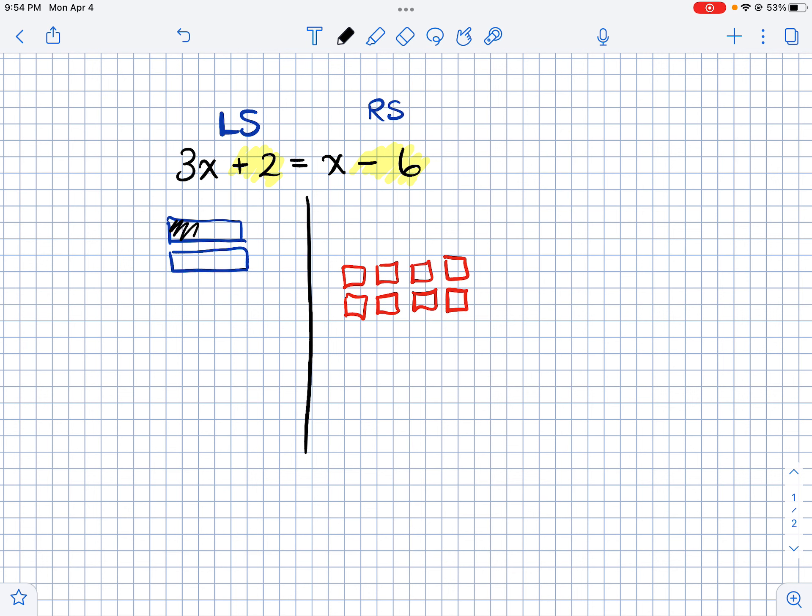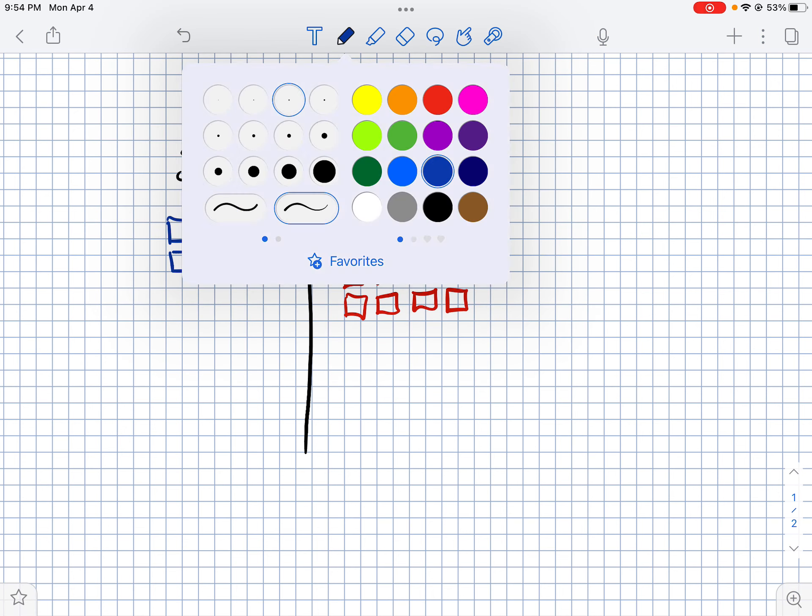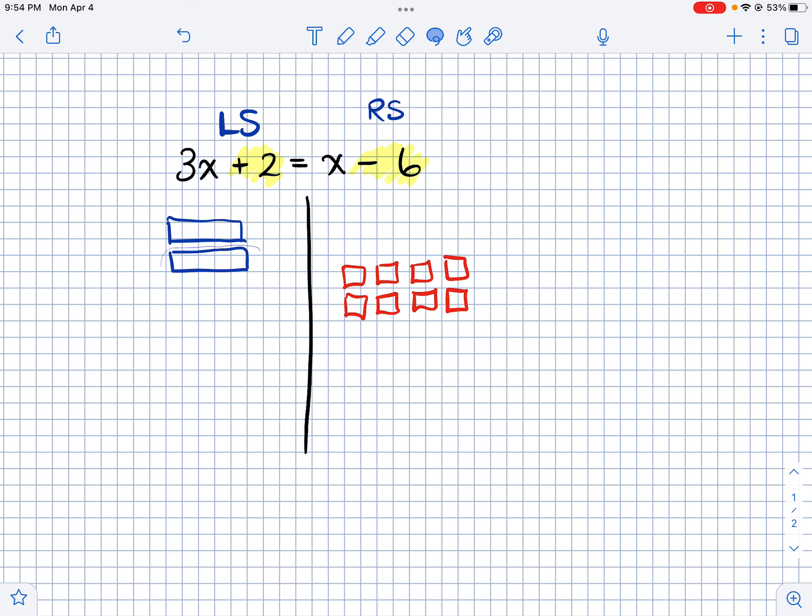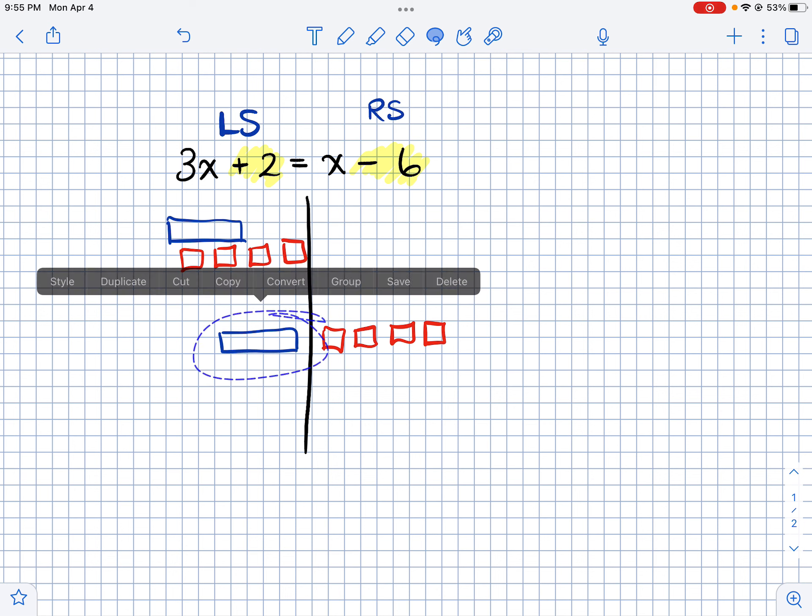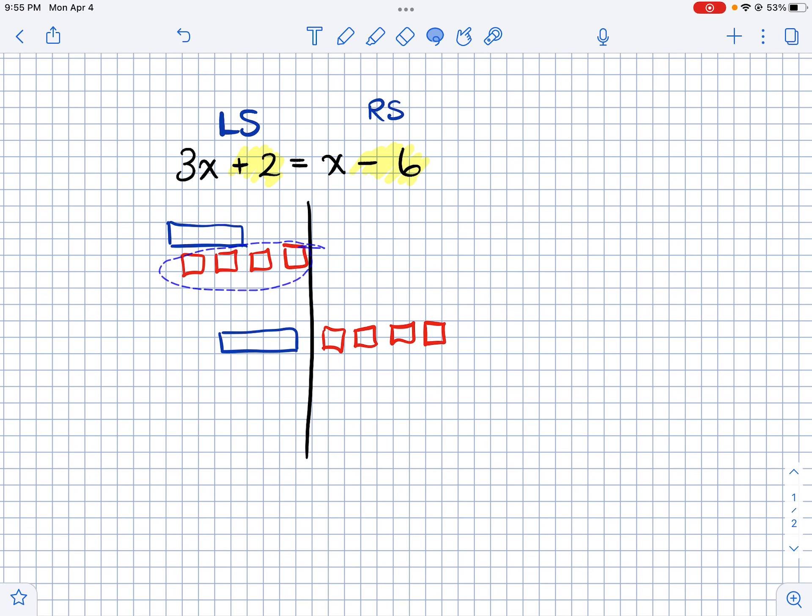So now my goal is to figure out what is one x tile worth. So now I kind of want to split these single tiles evenly amongst the x's. So I'll take this guy down here. And then I can see pretty easily that if I pair these four with this guy, then those four can fit with that x. So now I can tell that one x tile is equal to negative four. So I just solved this equation. I just figured out that X is equal to negative four using algebra tiles.